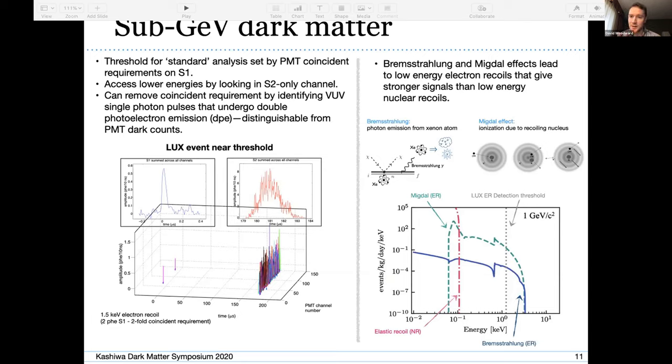Xenon TPCs can look for sub-GeV dark matter by trying to reduce the energy thresholds, which are mostly set by requirements on the S1 signal. We can get around that by just looking in the S2-only channel, or we can try and remove the coincident requirements on the S1 signal by utilizing this thing called the double photoelectron emission effect, which basically identifies real VUV photons from xenon scintillation from backgrounds from PMT dark counts. We can also utilize the bremsstrahlung and Migdal effects, which we heard about earlier in this session. Just to say that in xenon TPCs, ER signals give a stronger signal at low energies than nuclear recoils, so we can very effectively use this to search for lower mass dark matter.